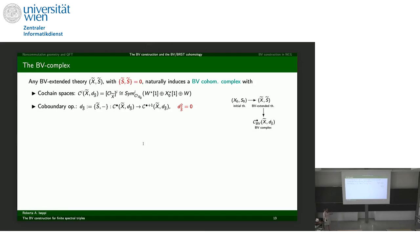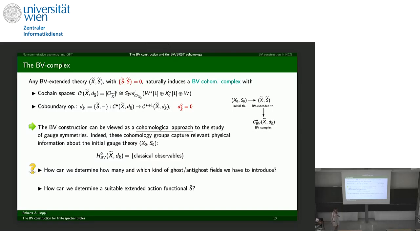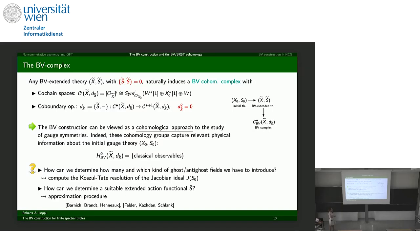The BV formalism can be seen as a homological approach to dealing with gauge symmetries. Looking at the homology groups, in degree zero one finds the classical observables. To determine how many and which ghosts and anti-ghosts to introduce, the ghost sector is constructed using the Koszul–Tate resolution of the Jacobian ideal of the action functional. The number of these lower-degree new variables is related to the symmetries of the action functional.